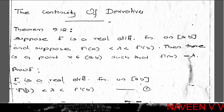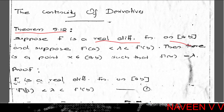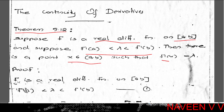Theorem 5.12 — Continuity of Derivatives: Suppose f is a real differentiable function on closed interval [a, b], and suppose f'(a) < λ < f'(b). Then there is a point x in open interval (a, b) such that f'(x) = λ. That is, if λ is any value between f'(a) and f'(b), there exists a point in (a, b) where f' attains that value.